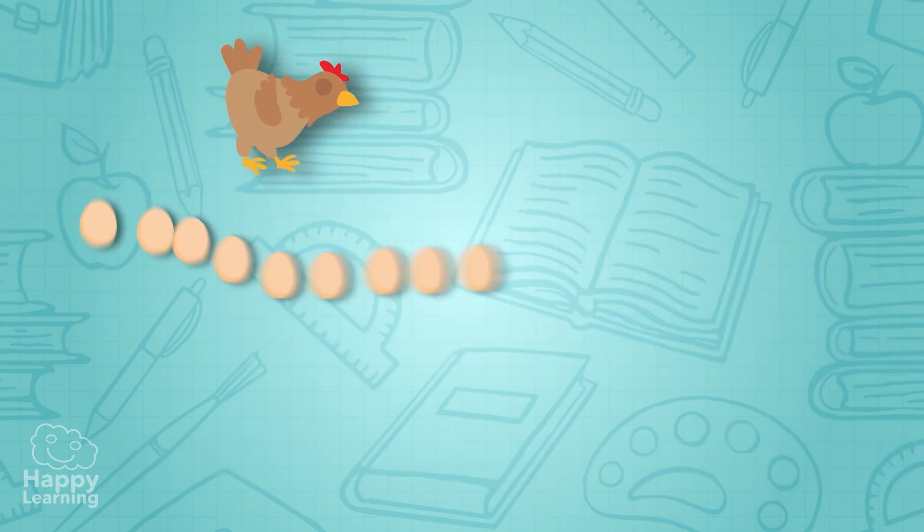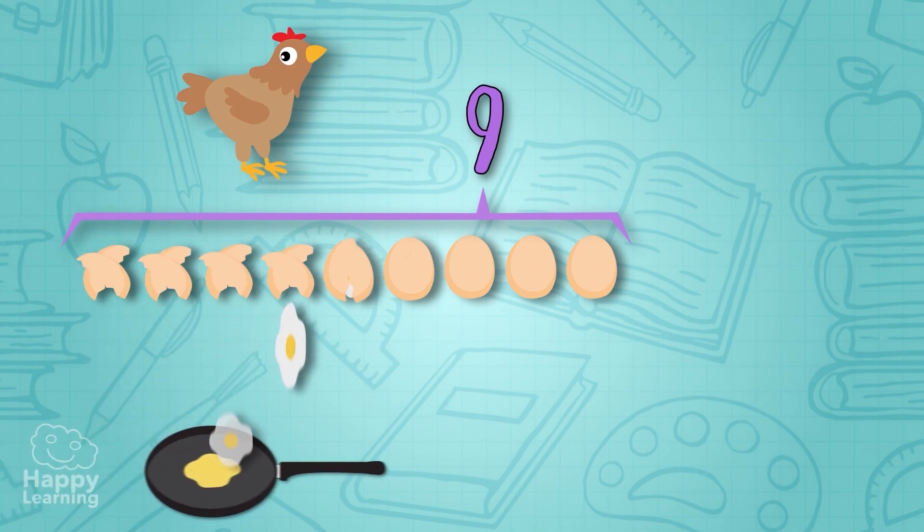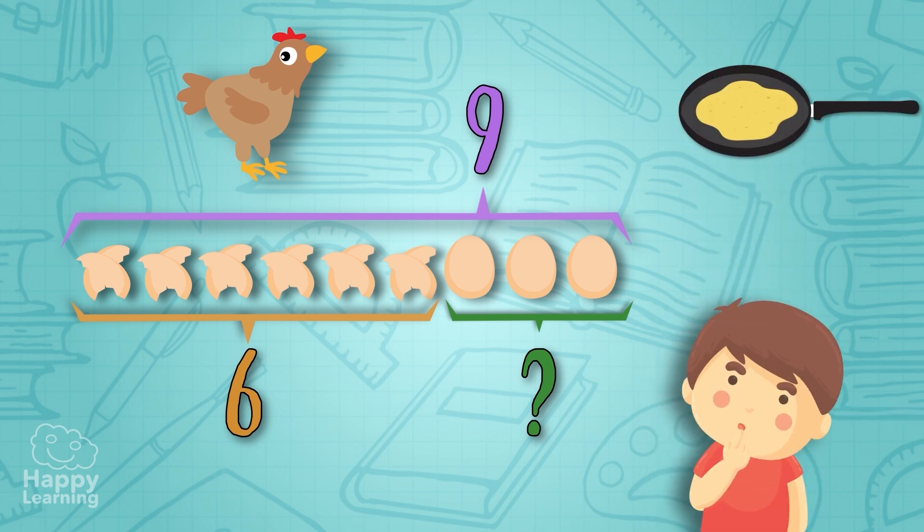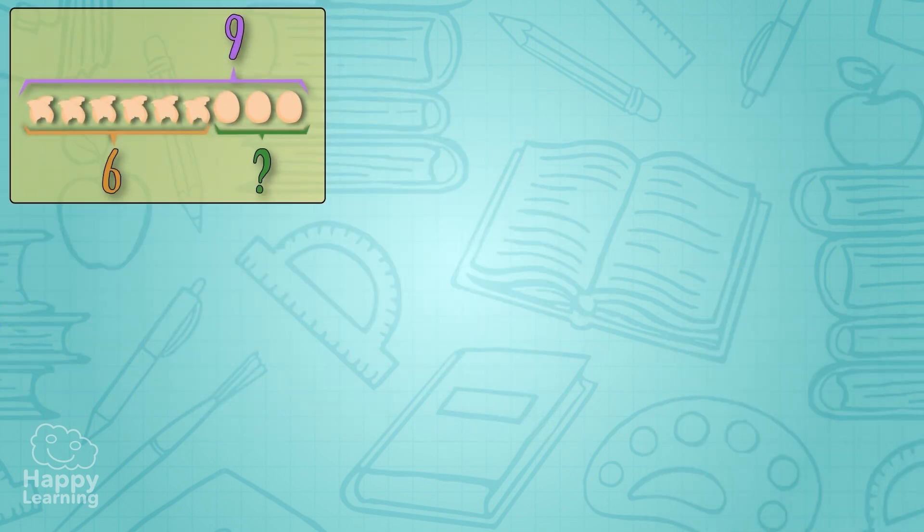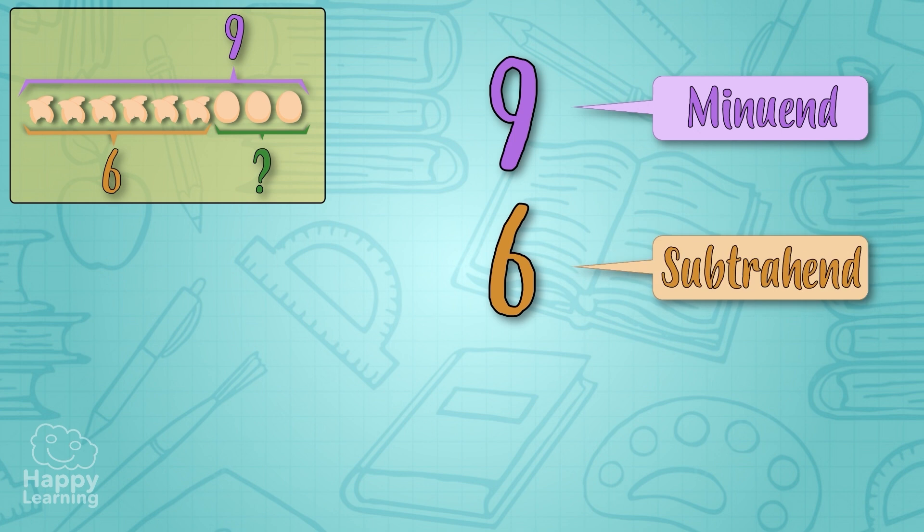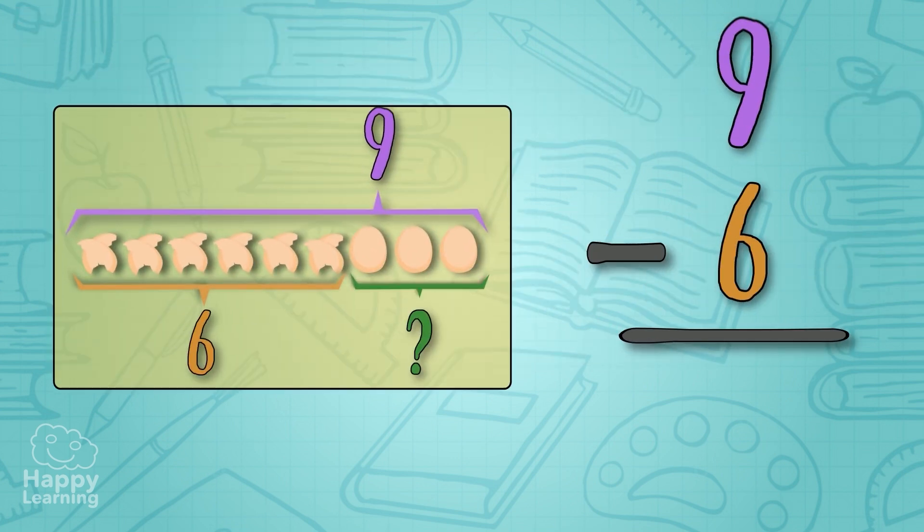How do we do the subtraction? First we need to place number nine, which is the minuend, the number of eggs that we have at the beginning. Under it we'll place number six, which is the subtrahend, the number of eggs that we'll use to make an omelette. After this we place the minus sign on the left side of the subtrahend and we draw a horizontal line under the subtraction's numbers.